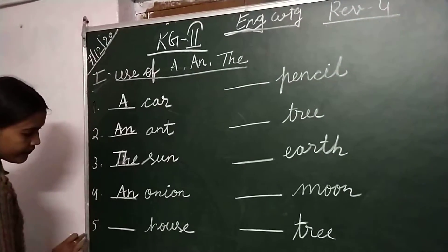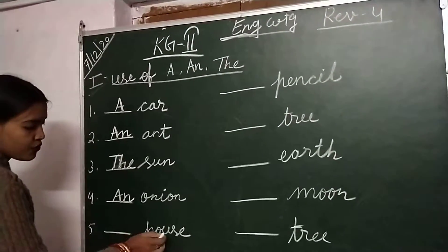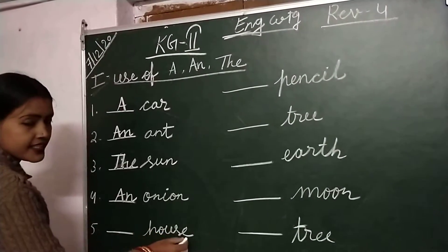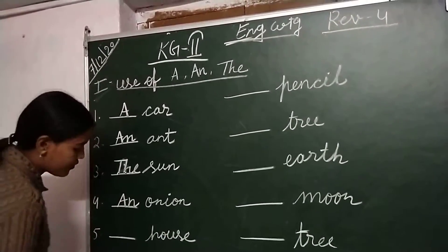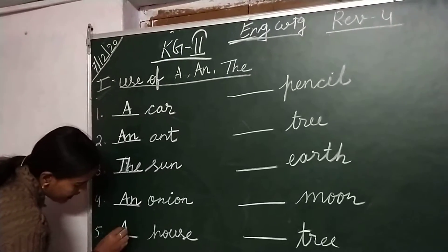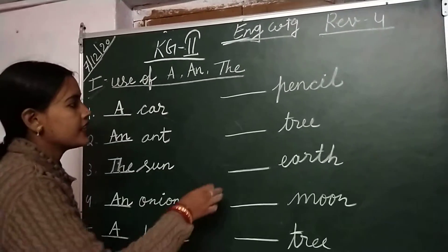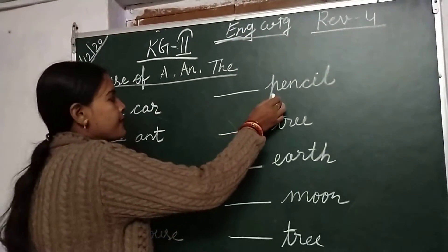Next, number 5 is house. H-O-U-S-E, house. Write down: a house.